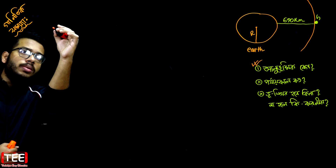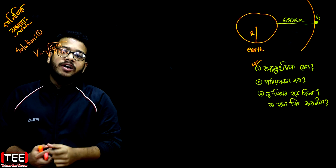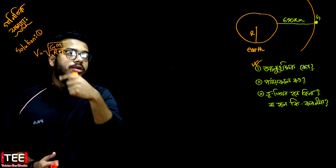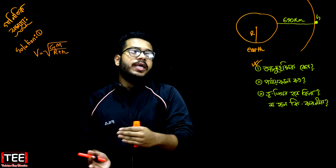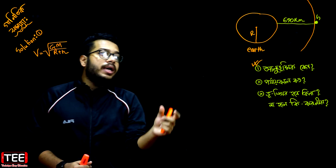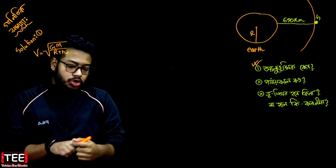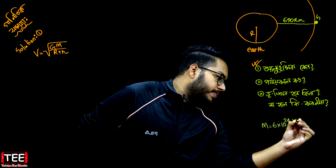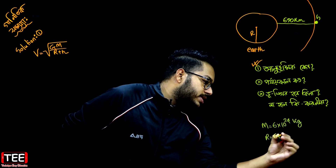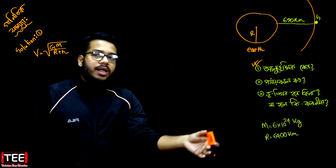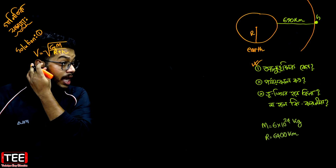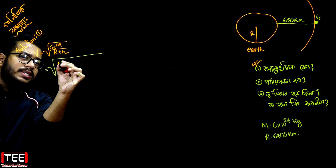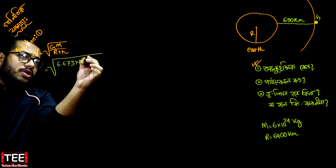So I will try: v equals to root of GM divided by r plus h. Then, what happens with h? Here the satellite goes higher from the Earth's surface, and the gravitational value of Earth — the gravitational constant G and mass of Earth M are referenced here.